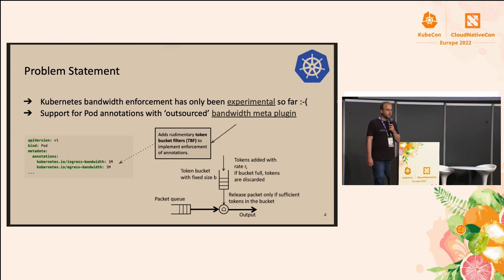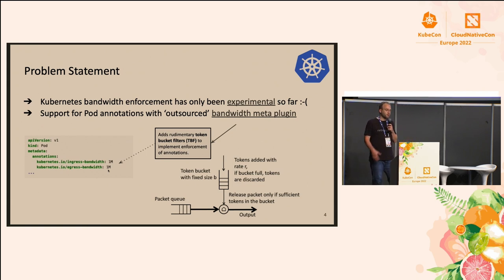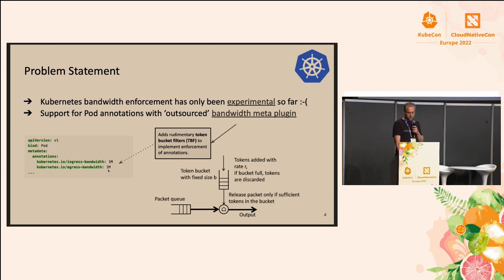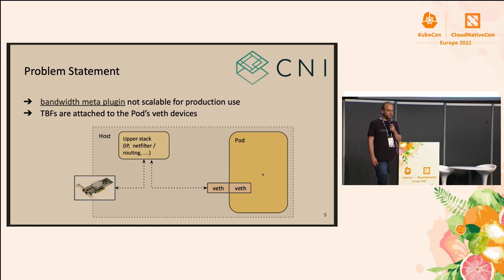There is infrastructure for that in Kubernetes — bandwidth enforcement — though so far it has only been experimental. If you look into the pod spec, there are Kubernetes-specific annotations: an ingress annotation and an egress annotation. You can specify something like a pod should get an egress bandwidth of 50 megabits per second. Support for that pod annotation has only been implemented with the bandwidth meta plugin from the CNI plugin collection, which implements a basic token bucket filter from the Linux traffic control subsystem.